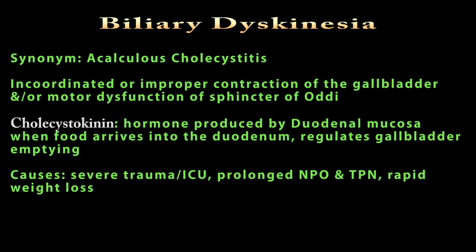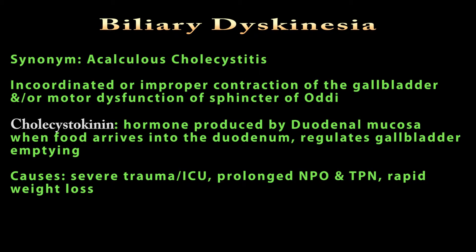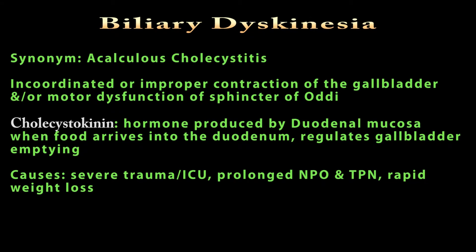Another rather common and underdiagnosed condition is called biliary dyskinesia, also known as acalculous cholecystitis. The patient does not have gallbladder stones. It is thought to be caused by incoordinated or improper contraction of the gallbladder and/or motor dysfunction of the sphincter of Oddi. Normally, gallbladder function is regulated by a hormone called cholecystokinin, produced by the duodenal mucosa when food arrives into the duodenum. We see this condition in patients with prolonged periods of nothing by mouth (NPO) and IV nutrition or TPN, and also in rapid weight loss such as in bariatric surgery.